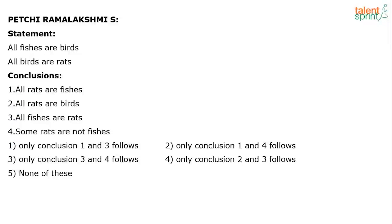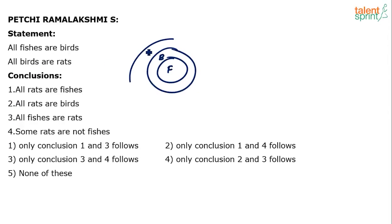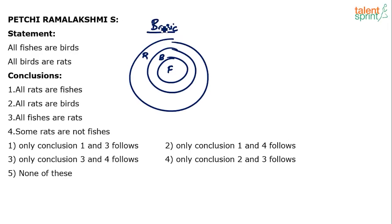Only two statements with four conclusions. What are the statements? All fishes are birds. All birds are rats. So, simple diagram, this is the basic diagram, the so-called basic diagram which involves minimum overlapping. All fishes are birds and all birds are rats.